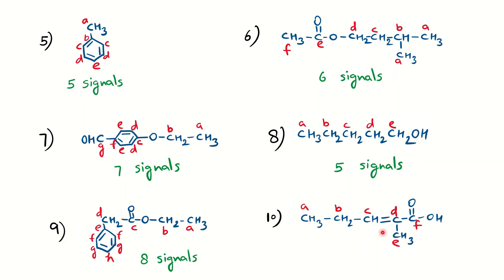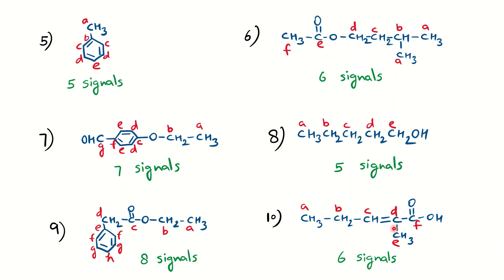For this alkene example, there are two methyl groups present, but both methyls are in chemically distinguished environments. The first methyl, signal A, is attached to a CH2 group, while the other methyl, signal B, is attached to the alkene carbon. So both are chemically distinguished and give separate signals. CH2 gives a separate signal, the CH of the alkene gives a separate signal, the quaternary alkene carbon gives signal D, and the carboxylic acid carbonyl gives signal F. Total six signals for this molecule in C-13 NMR.